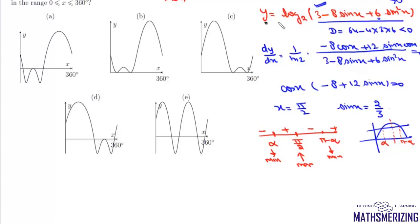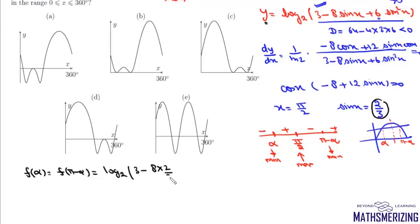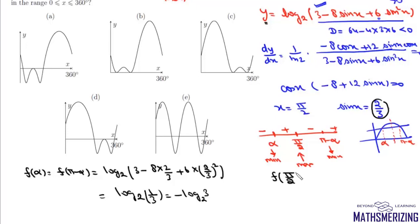We compute function values at key points. Since sinα = sin(π - α) = 2/3, f(α) = f(π - α) = log(3 - 8·(2/3) + 6·(2/3)²) to base 2, which gives log(1/3) base 2, a negative value. At x = π/2, sin = 1, so f(π/2) = log(3 - 8 + 6) = log(1) = 0.